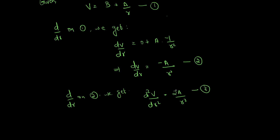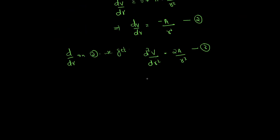In both steps we used the formula d/dr(rⁿ) = n·rⁿ⁻¹. For the first step, −1 · r^(−1−1) = r^(−2). For the second step, −2 · r^(−2−1) = −2r^(−3). So we have three equations, and we need to eliminate the arbitrary constants a and b. Comparing equations 2 and 3, there is only one arbitrary constant, which we can eliminate using those two equations.